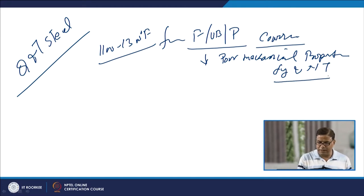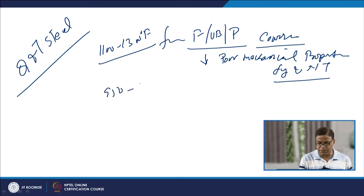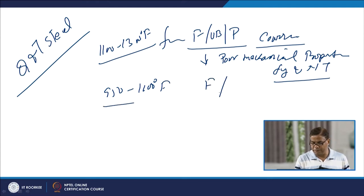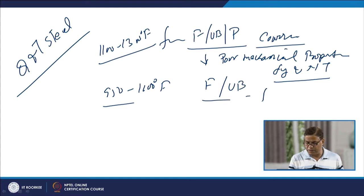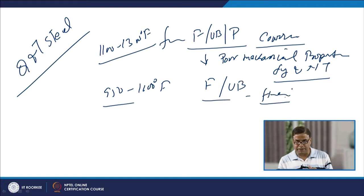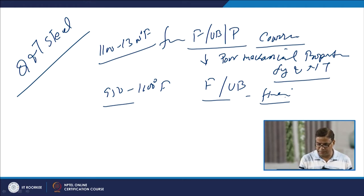On the other hand, when exposure is given at a somewhat lower temperature, say 950 to 1100°F, we primarily get ferrite and upper bainite, but it is a little bit finer and offers a somewhat better combination of mechanical properties.